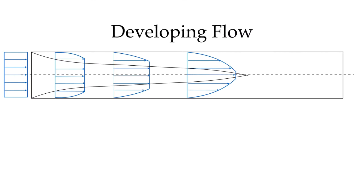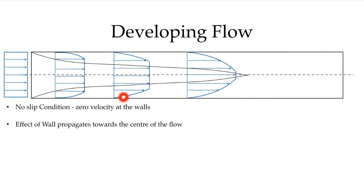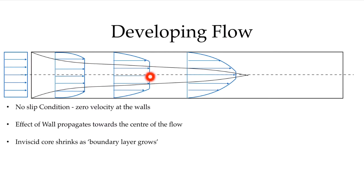Let's look at the developing flow region in our pipe. We notice that we have the no-slip condition, and therefore we have zero velocity at the walls. When we have the plug flow entering the pipe, we have a very quick change where it goes to zero. As we move down in the flow direction, the region affected by this no-slip condition gets larger and larger until it covers the whole section of the pipe at the end of the developing flow region. The region in between where the effect of the wall is not yet felt can be called the inviscid core — it's inviscid because there's no velocity gradient here. The shear stress equals viscosity times the derivative of velocity, and that derivative with respect to radius is zero when we have a constant. The inviscid core is shrinking until there is no inviscid core once we reach the end of the developing flow region.